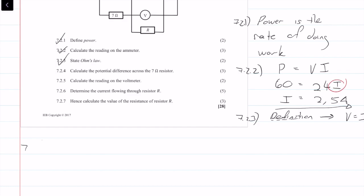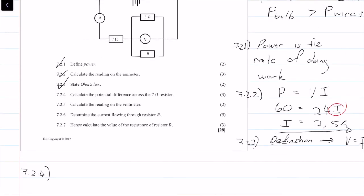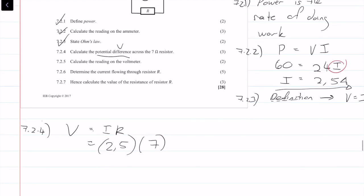Question 7.2.4: calculate the potential difference across the 7-ohm resistor. Using Ohm's law, V equals IR, with current 2.5 amps and resistance 7 ohms, the voltage is 17.5 volts. We get three marks for this.